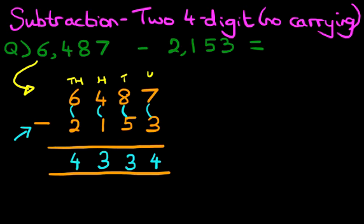And we have our answer. 6,487 minus 2,153 is 4,334. That is correct. Let's give it a nice big tick. So, that is how we do subtraction of two four-digit numbers with no carrying using the vertical format.